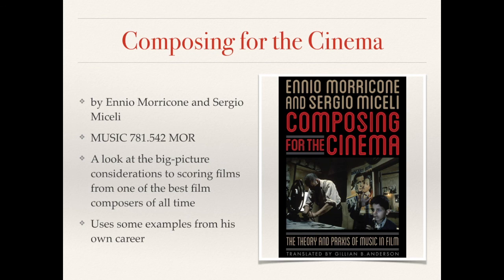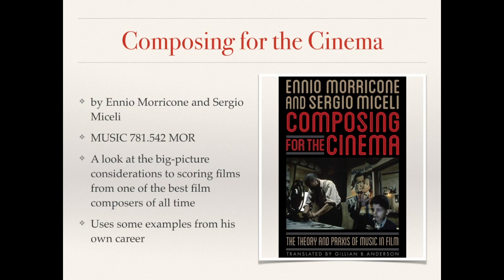Next we have Composing for the Cinema by Ennio Morricone and Sergio Michelli. We recently lost legendary film composer Ennio Morricone, but we're fortunate that he left us with this book — a collaboration between Morricone and musicologist Sergio Michelli. The material collected in this book started life as a series of film music seminars the two taught throughout the 1990s. Recordings were made of their lectures, and that material was used to create this book. Rather than an instructional manual on how to compose music scene by scene, Morricone and Michelli look at the intersection of film and music from a big picture perspective, and break down the kinds of cinematic considerations that inform effective film scoring approaches. Later in the book, Morricone discusses a bit of the business behind film scoring and some of the processes a score undergoes before a film is finished, using examples from his own prolific career.